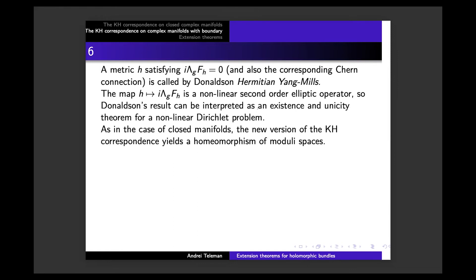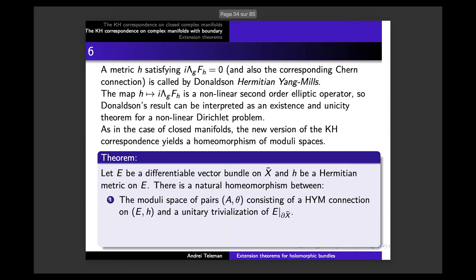Interestingly, as in the case of closed manifolds, the new version of the Kobayashi-Hitchin correspondence yields a homeomorphism of moduli spaces with geometric consequences. The analogy is very beautiful. We fix a differentiable vector bundle on a Kähler manifold with non-empty boundary, and we fix a Hermitian metric — the input is no longer a holomorphic bundle but a Hermitian bundle.